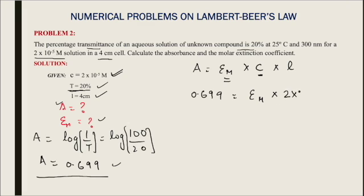Concentration is 2×10^-5 molar. I do not need to do any conversion because it is already in terms of molarity. Path length is given to us as 4. So when I substitute these values...